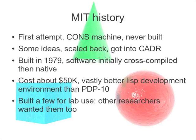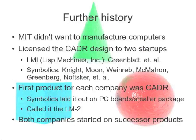The first attempt was a machine called CONS, which was never built. Some of the ideas from it were put into a machine called the CADR, which got built — notice the name. It was built in '79 and somewhere between eight and twelve were made at MIT. They cost between 50 and 60K per researcher and were much better at doing Lisp software development than the PDP-10. Visiting researchers saw them and said they'd like some, but MIT didn't want to be in the manufacturing business. So they licensed the CADR design to two startup companies: Lisp Machines Inc. and Symbolics. Russell Noftsker, Tom Knight, Dave Moon, Dan Weinreb, Mike McMahon, and Bernie Greenberg were at Symbolics; Richard Greenblatt and others were at LMI.